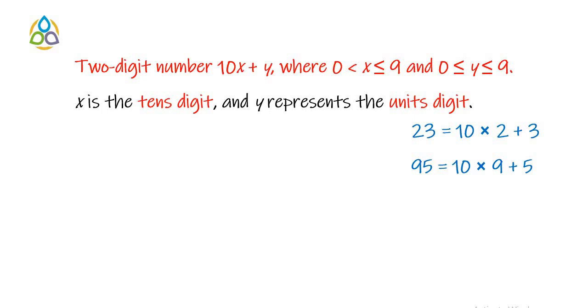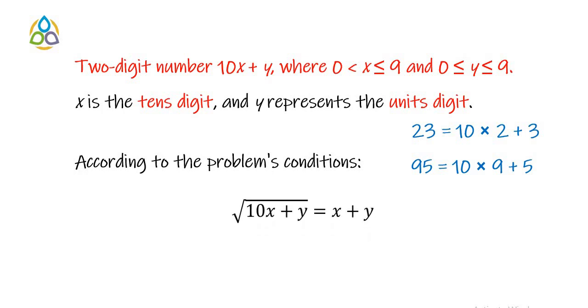Now what is the condition of the given problem? According to the problem condition, we have square root of 10x plus y equal to x plus y. Why 10x plus y? Because 10x plus y is the two-digit number and we need to take the square root, and the right hand side is x plus y, which is equal to the sum of the digits. Squaring both sides, we get x plus y whole square equal to 10x plus y. Let's consider this as equation number 1.